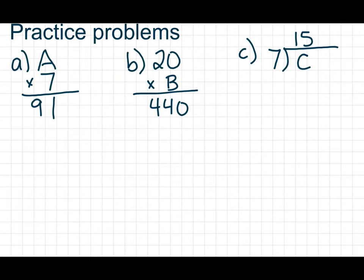All right, so let's get into the practice problems here. The first one is A times 7 equals 91. Well, our product is 91. So remember, these are the factors, A and 7. So 91 divided by 7 will equal A. 91 divided by A will equal 7. So that gives us A equals 13.